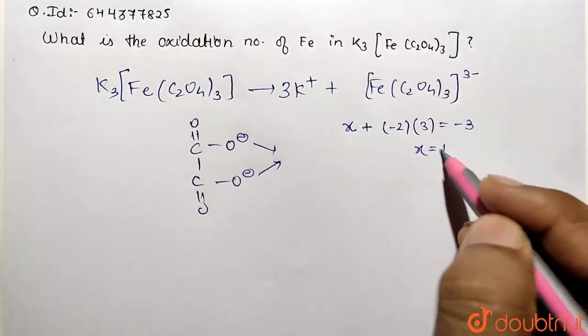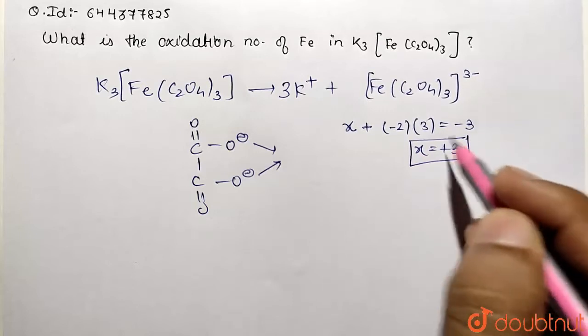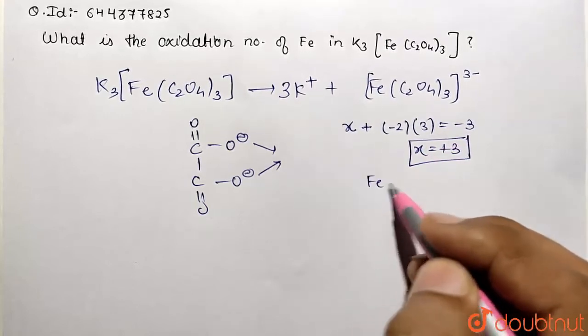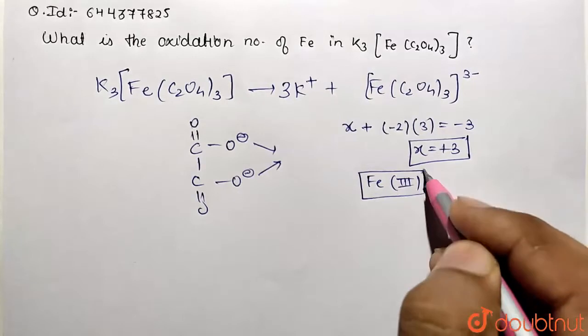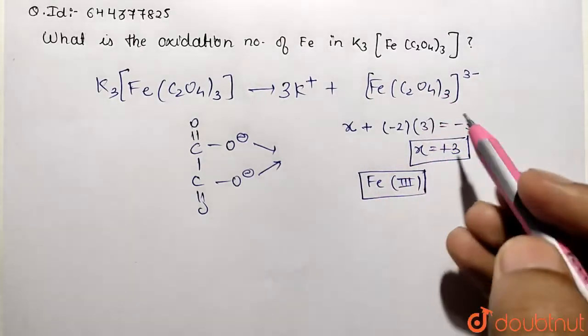So what does it show? Iron is present in the third oxidation state in this given complex entity. So that's what we need to calculate. What is going to be our answer? The answer is going to be three, the oxidation number.